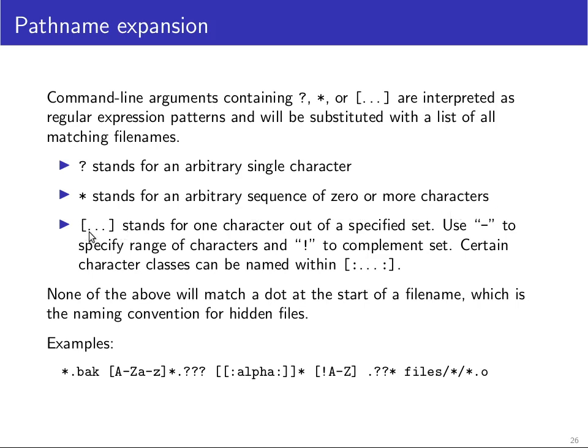And the square brackets stand for one single character out of a specified set. So for example, if you write in square bracket a to Z, capital A to capital Z, lowercase a to lowercase z, then this entire expression represents one either uppercase or lowercase character in the range a to z. If you write star dot bak, that just refers to all files that end with the extension dot bak. This expression is an uppercase or lowercase letter, followed by zero or more additional letters, followed by a full stop, followed by an extension or a suffix of exactly three characters.